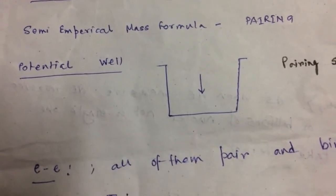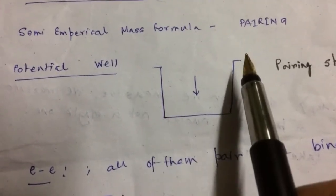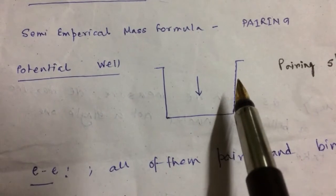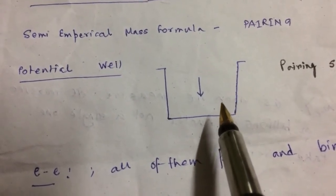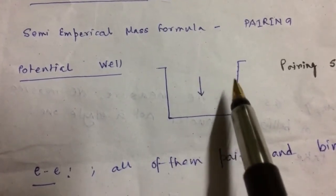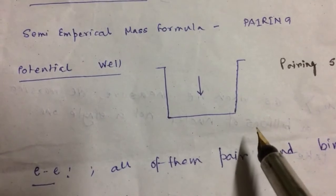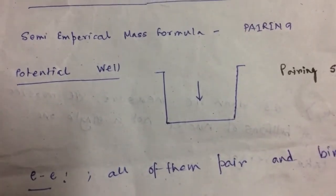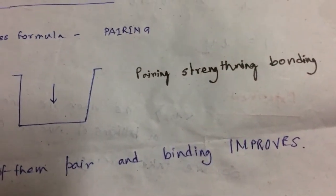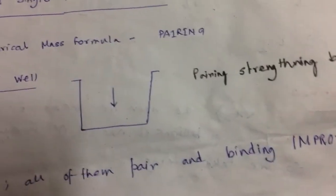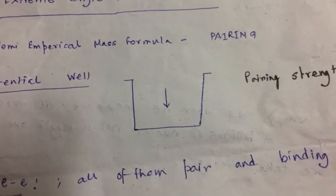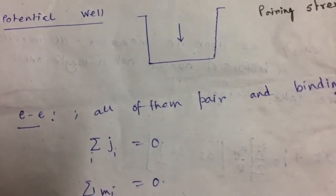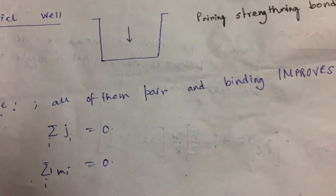We have also discussed the potential well, which was negative for a certain distance, and because of this shape the nucleus is held together by the attractive force between nucleons. We have learned that the pairing term actually strengthens the bonding — the binding of the nucleus is better because of the pairing term. For even-even nuclei, all nucleons form pairs, which leads to improvement in the binding energy.